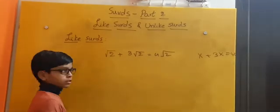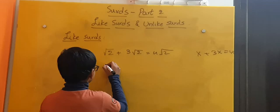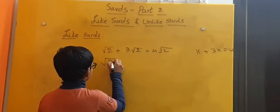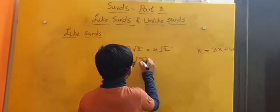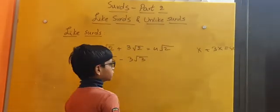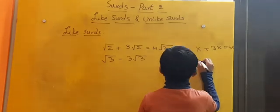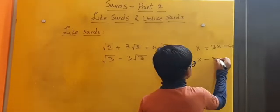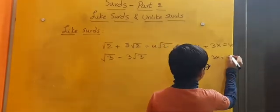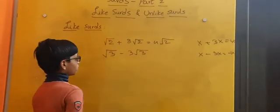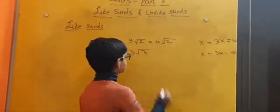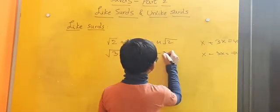Now let us take one more example. √3 - 3√3. In general, we know that x - 3x is equal to -2x. In the same way here, √3 - 3√3 is -2√3.